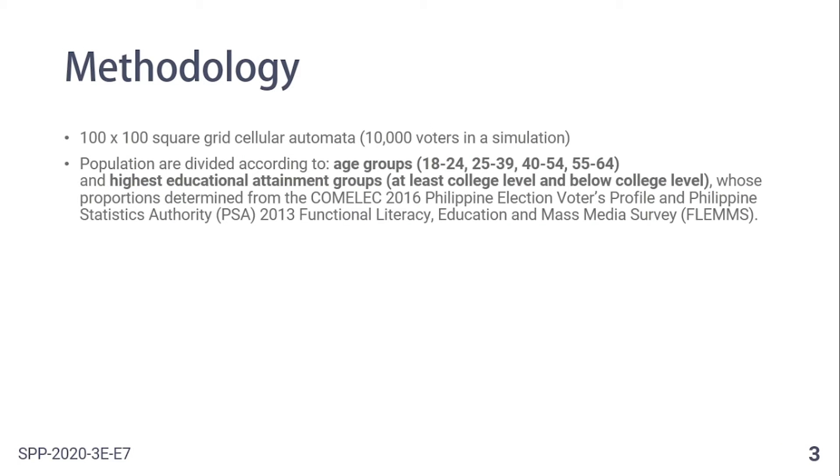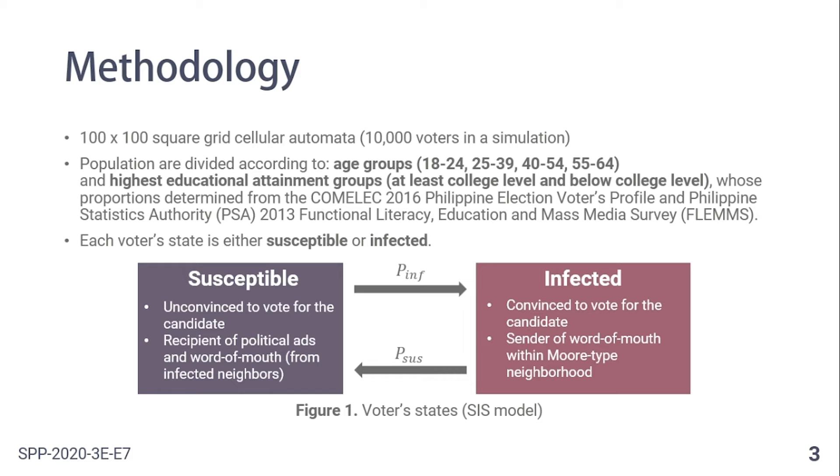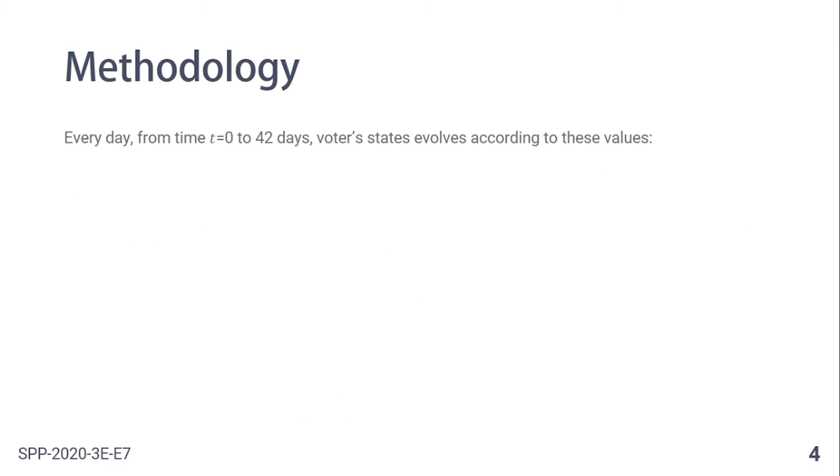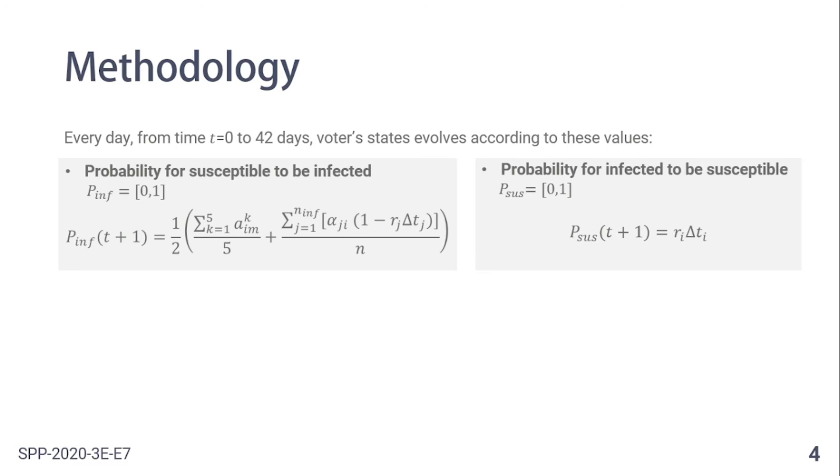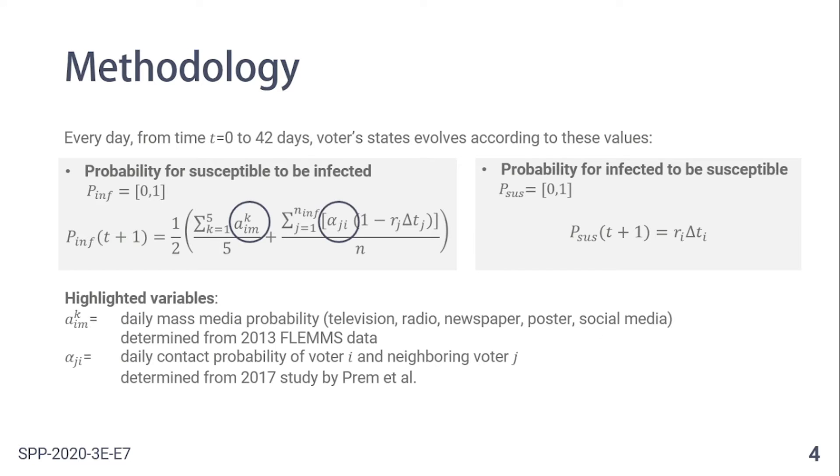For our methodology, each of the 10,000 voters in a cellular automata is characterized based on age and highest educational attainment whose proportions are from COMELEC and PSA data. Each voter has either of the two states, susceptible and infected, where the infected are those who vote for the candidate. In each day, each voter state evolves according to these two values, the p_n and p_sus, where the values for daily mass media exposure probability and daily contact probability fit the Philippine setting.